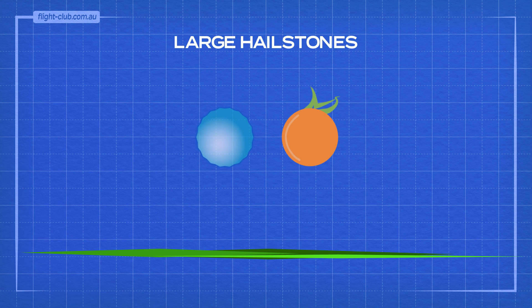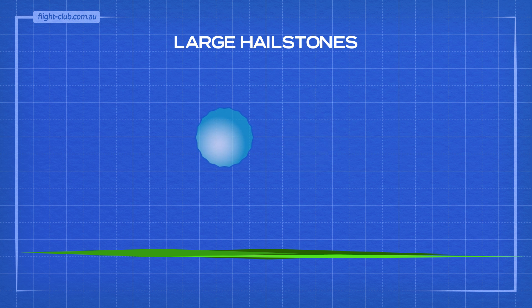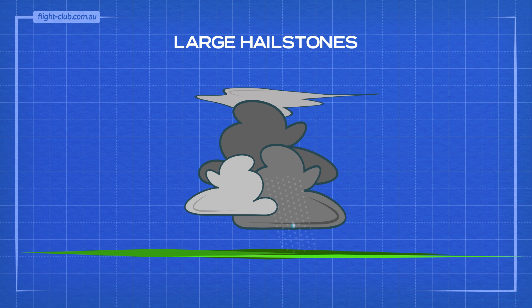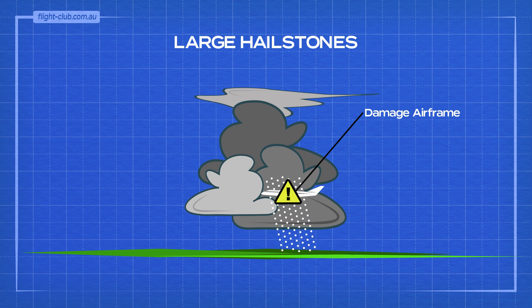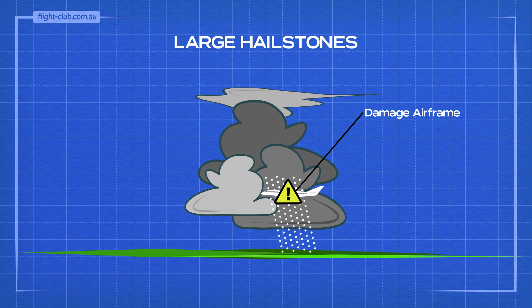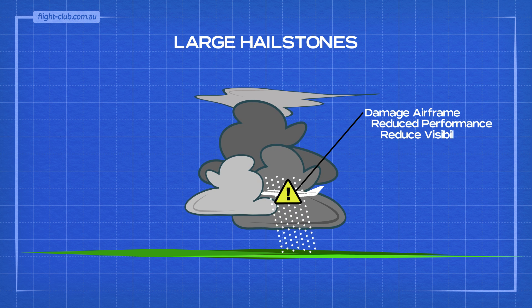Large hailstones from inside the cumulonimbus clouds can grow to the size of an orange. Such large hailstones can severely damage the airframe or cockpit windows, thus significantly reducing aeroplane performance and visibility.